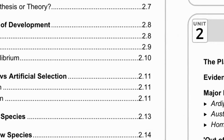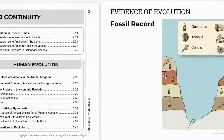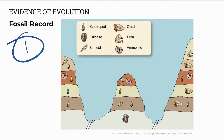Then we'll look at evidence of evolution. What evidence is there for evolution? We'll be looking at six different evidences. Number one, the fossil record. In the fossil record, only some organisms become fossilized, so it's an incomplete record, but that is our number one evidence.